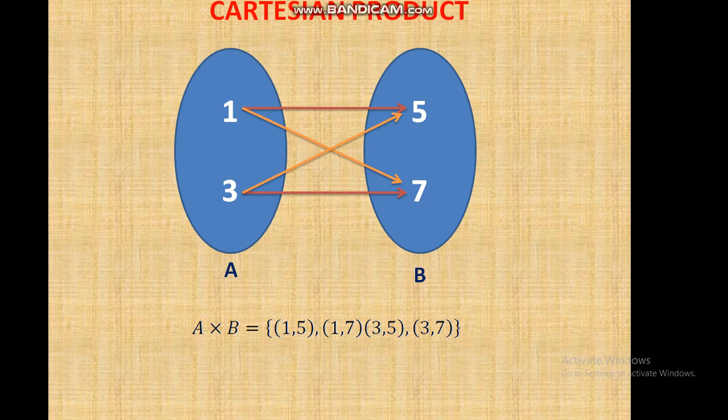A is a set containing {1, 3} and B is a set containing {5, 7}. A × B is the cross product of these two sets A and B, which contains (1,5), (1,7), (3,5), and (3,7) as ordered pairs.